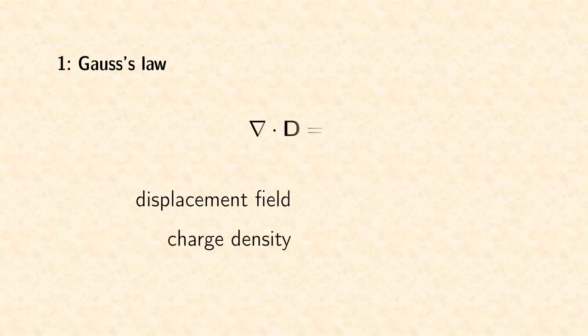The first equation is Gauss's law. It describes the generation of the electric vector field by the scalar field of charge density. The equation contains the displacement field to take into account the feedback effect of the generated electric field on the charge density.